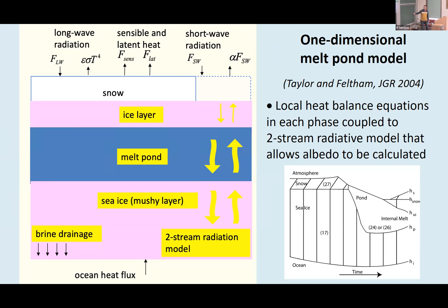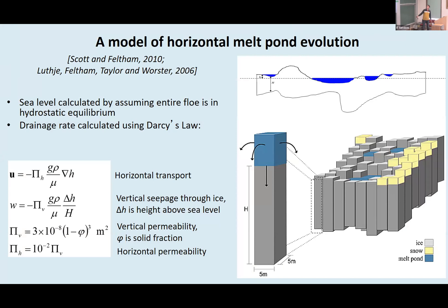In this model, there is sea ice with a mushy layer containing a solid fraction of salt. A melt pond can form on top, ice can grow on ice, and a lid can form on the melt pond or snow. The heat balance equations are calculated at each phase. Over time, sea ice and snow are present, then snow starts to melt and disappears, a melt pond forms, sea ice decreases, the pond becomes thicker, and at the onset of freezing a lid can form on the pond. Snow on ponds also has an impact on ice.